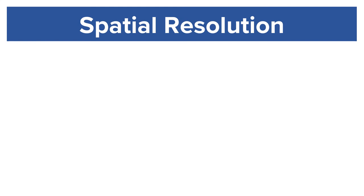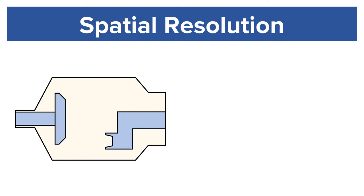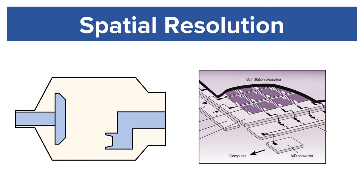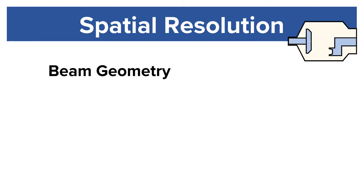Spatial resolution is affected by factors that happen before x-rays hit the image receptor, and factors that happen after x-rays hit the image receptor. Factors that happen before x-rays hit the image receptor are things affecting beam geometry, such as SID, OID, and effective focal spot.